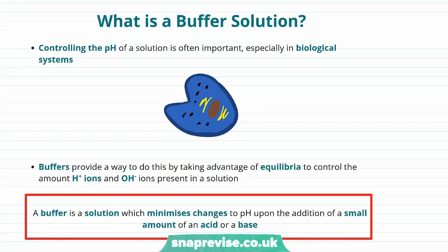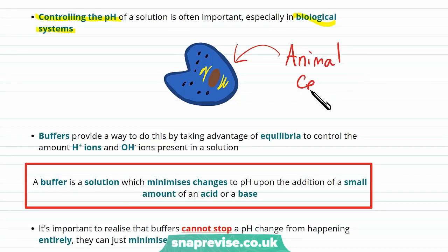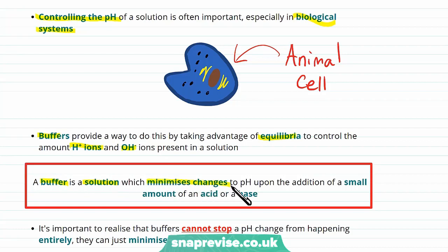So what is a buffer solution and why do we need them? Controlling the pH of a solution is often really important, especially in biological systems. This diagram shows a picture of an animal cell, and there are loads of different examples within animals of times when pH needs to be carefully controlled. Buffers provide a way to give this control by taking advantage of equilibria to control the amount of H+ ions and OH- ions present in the solution. The full definition of a buffer is that it's a solution which minimises changes to the pH upon addition of a small amount of acid or base.